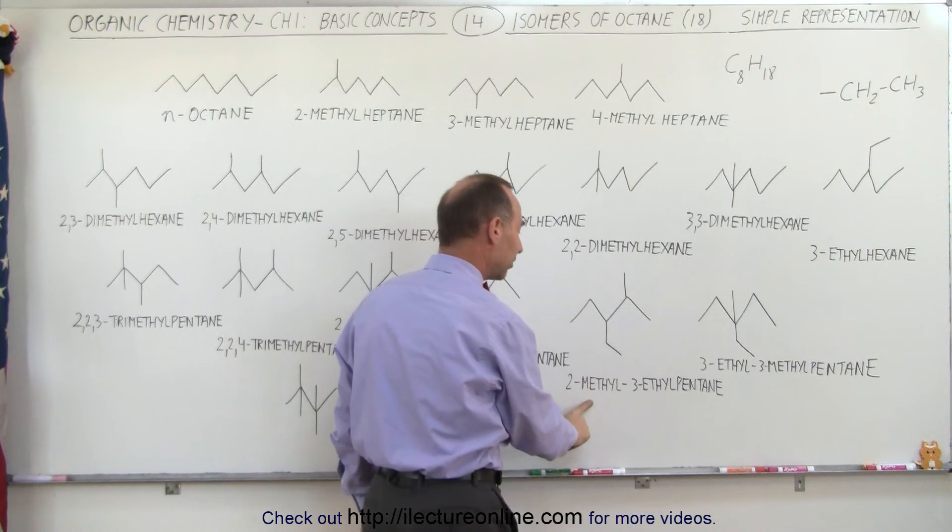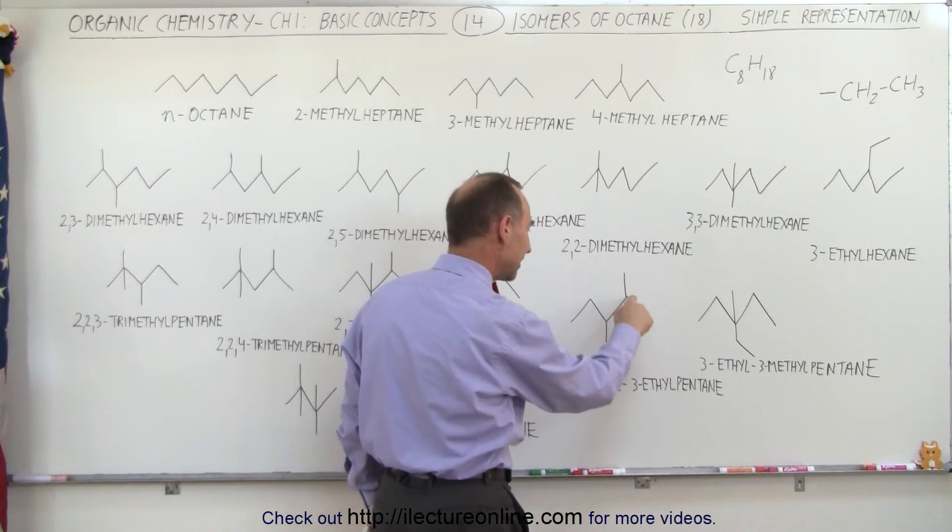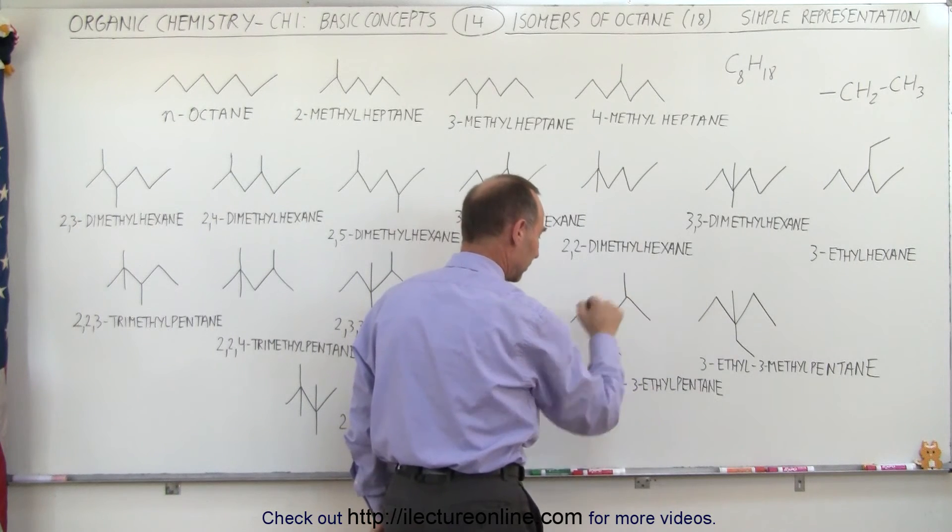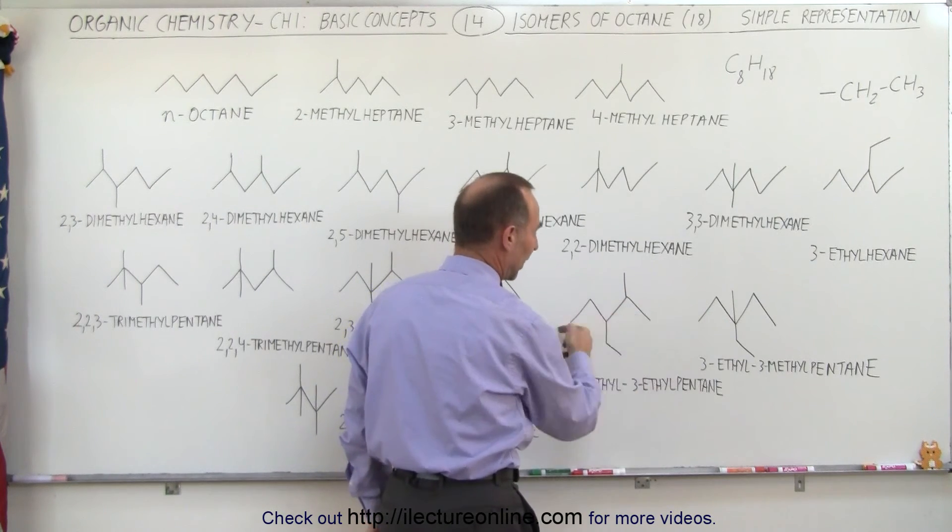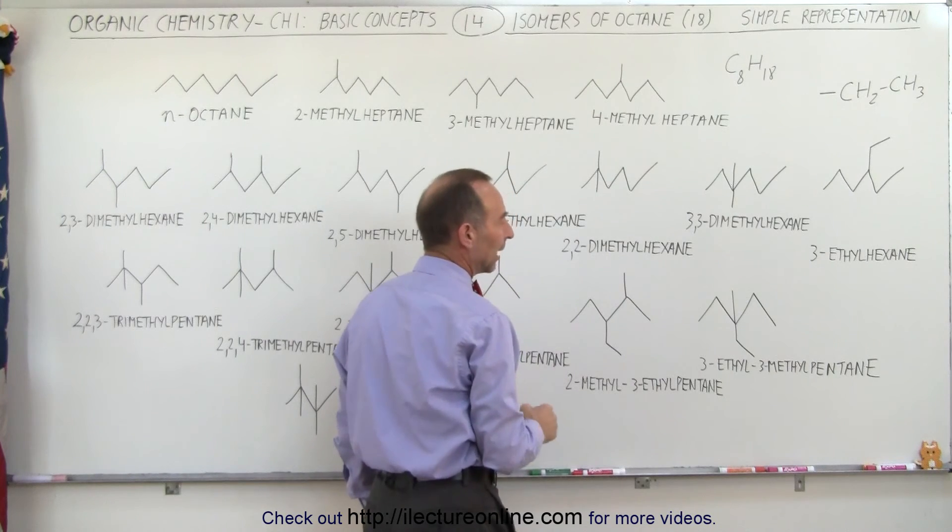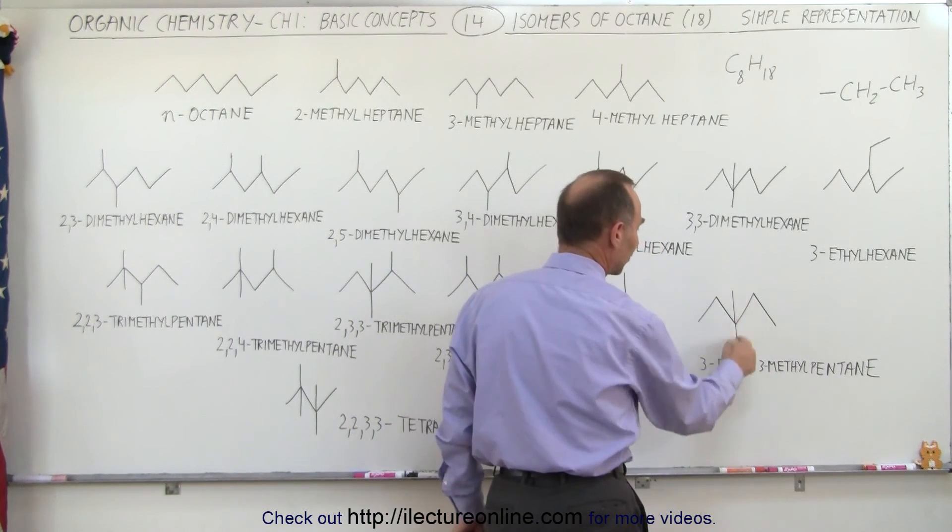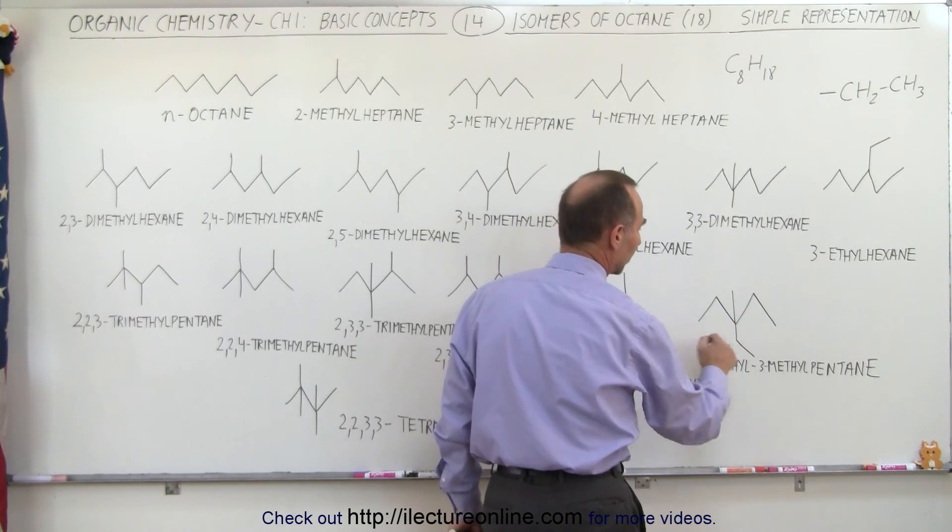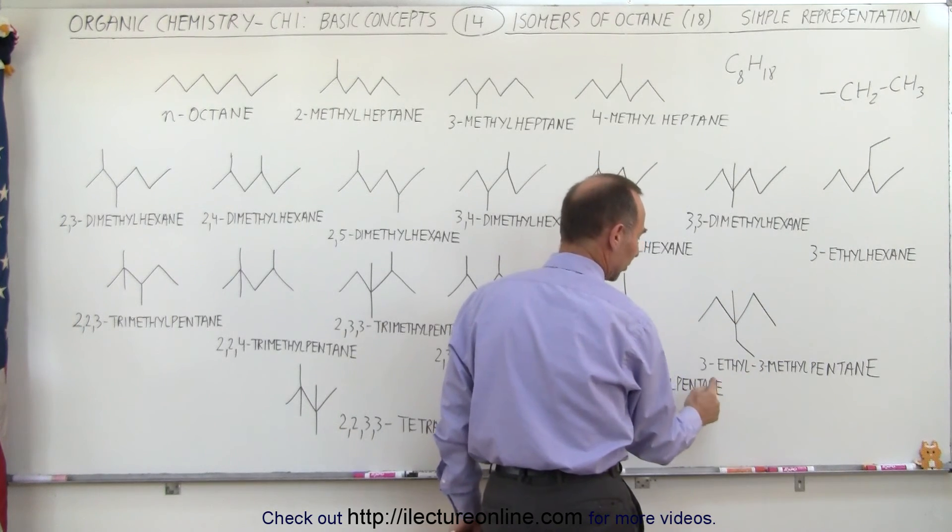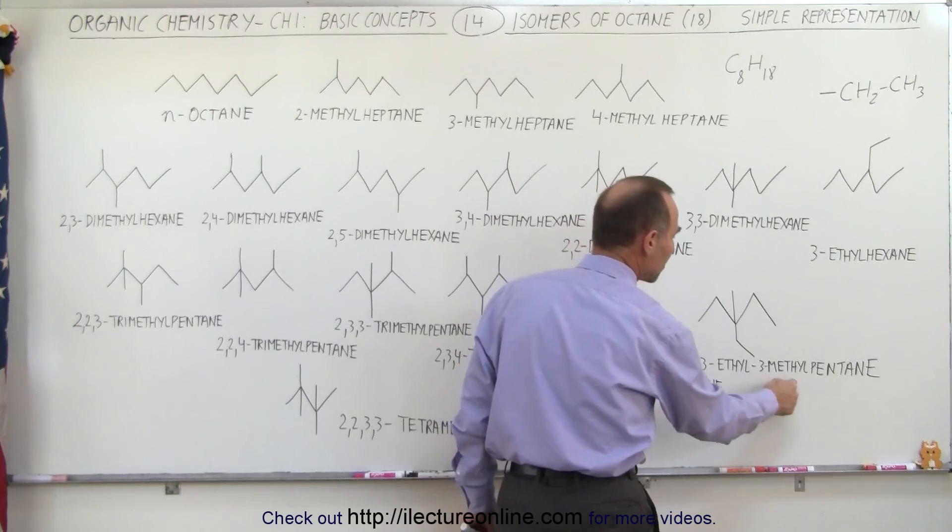One methyl group connected to the second carbon from the right and an ethyl group connected to the third carbon, no matter which direction you come from. And here we have again an ethyl and a methyl group, both connected to the third carbon regardless of which direction you come from. This is called three-ethyl, three-methylpentane.